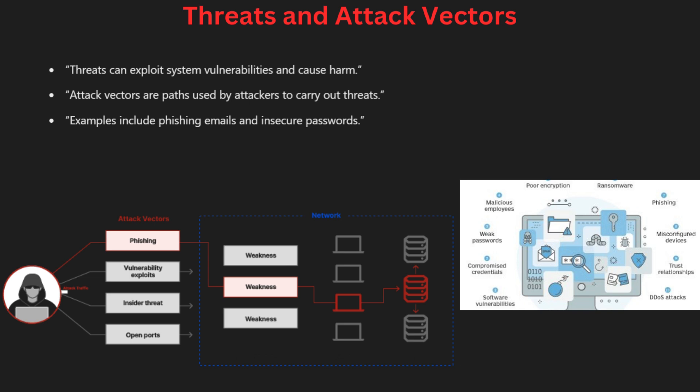Hackers can also use social engineering to trick people into giving them access. By understanding different types of attack vectors, we can better protect our systems by addressing weak spots. Knowing what could happen helps in preparing and preventing breaches.